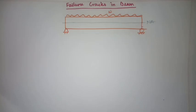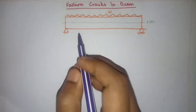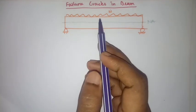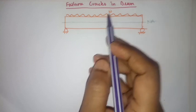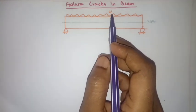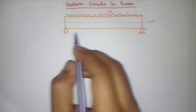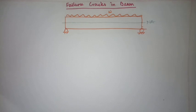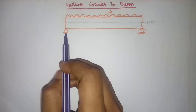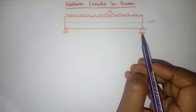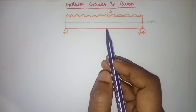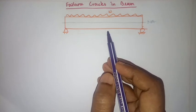Hello viewers, assalamualaikum. The topic I am going to discuss today is about failure cracks in beams. Here you can see a simply supported beam which is loaded with a uniformly distributed load, with two supports — one is a pin support and another is a roller support. What kind of cracks will be developed in this beam — today I will show you.